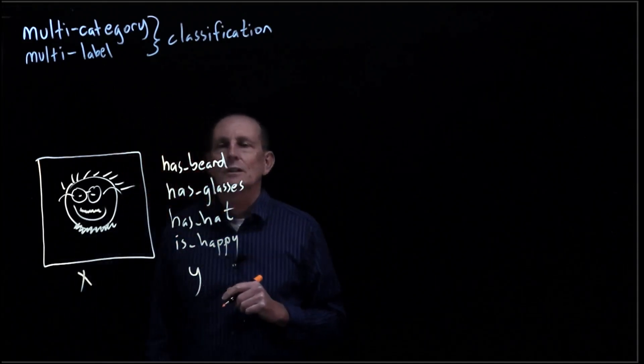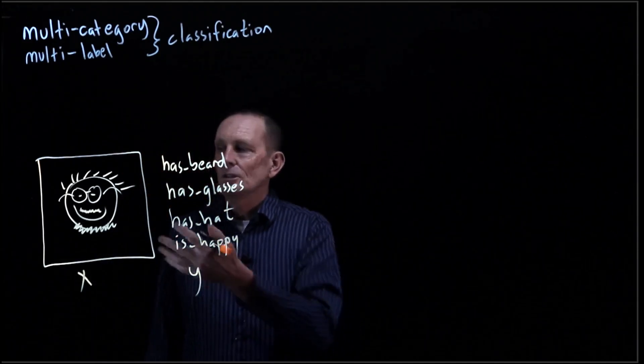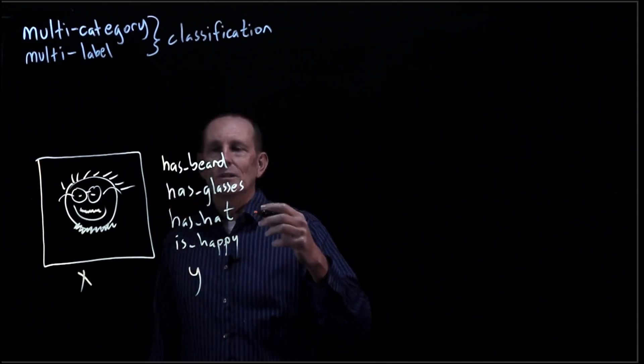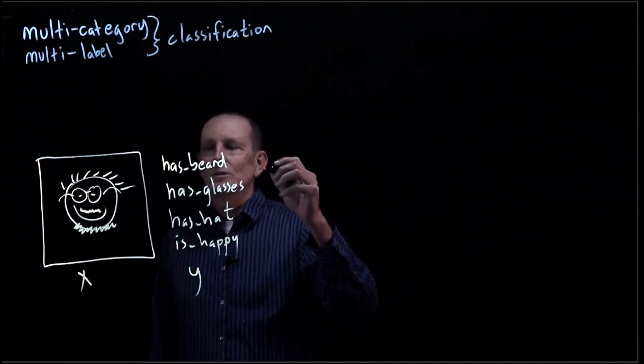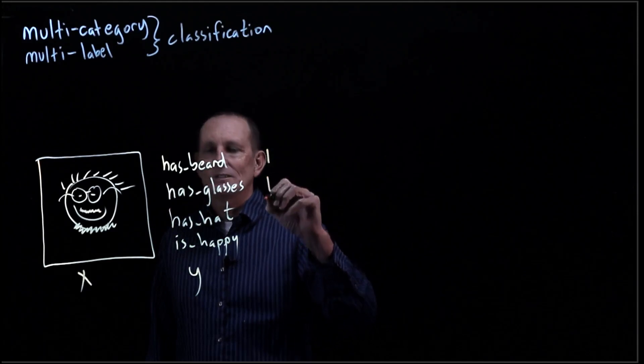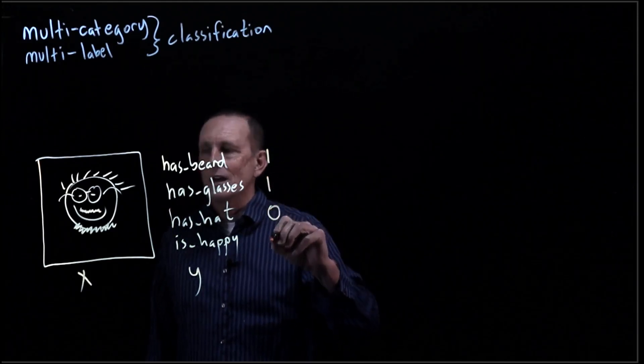And we're going to assume all these four things are independent. So in this particular case, if we were looking at a y, this would be yes there's a beard, yes there are glasses, no there's not a hat, and yes it's happy.